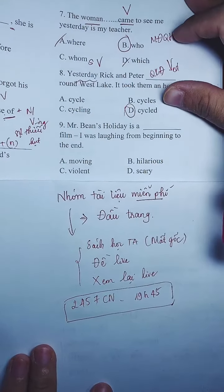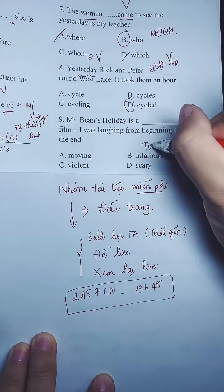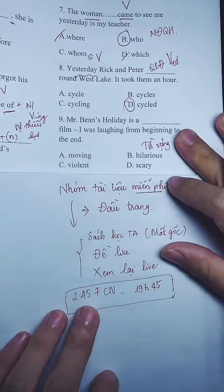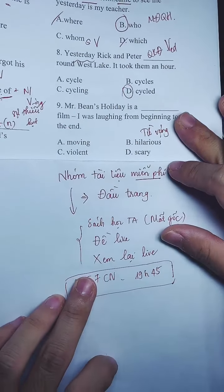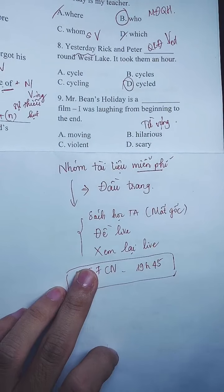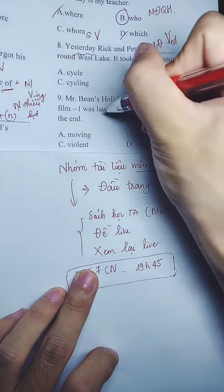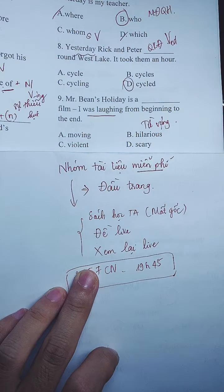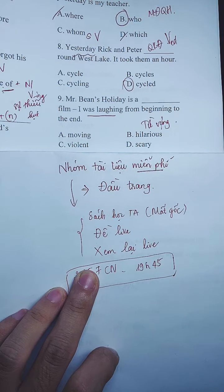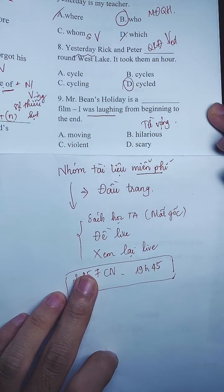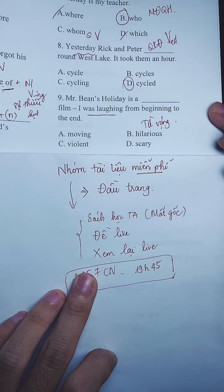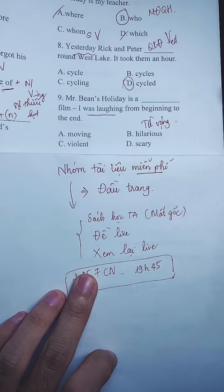Câu số 9 là câu về từ vựng — yêu cầu em phải dịch nghĩa. Mình sẽ dựa vào bối cảnh câu sau: 'Tôi cười từ đầu đến cuối.' Trên kênh này có rất nhiều video về lý thuyết cơ bản, các bạn có thể vào xem. Tôi cười thì nó phải là phim hài đúng không? Phim hài thì đáp án là B.